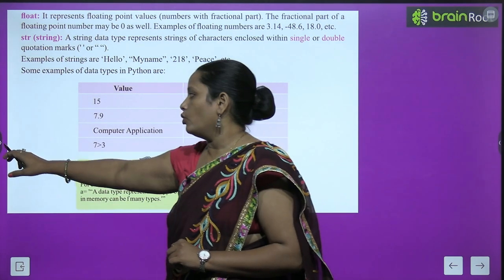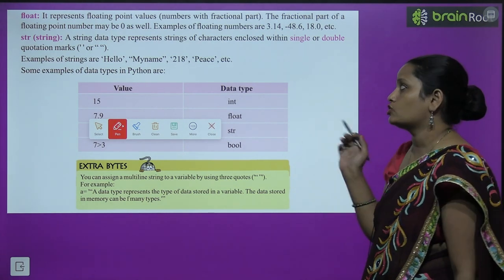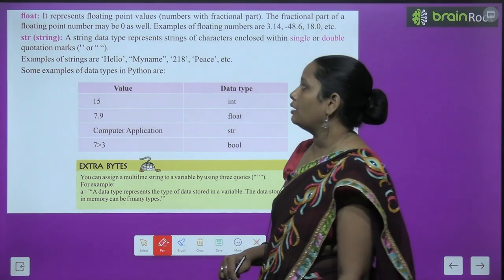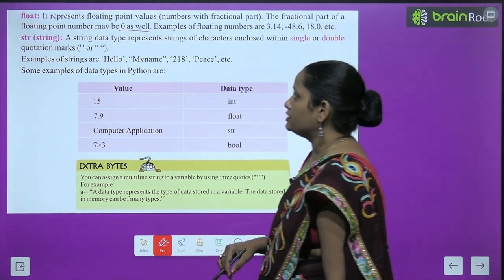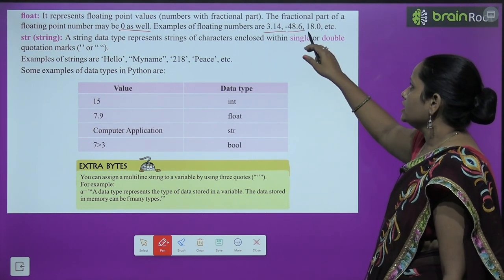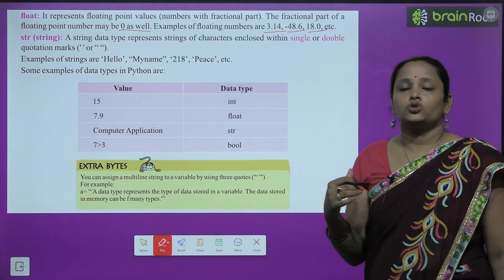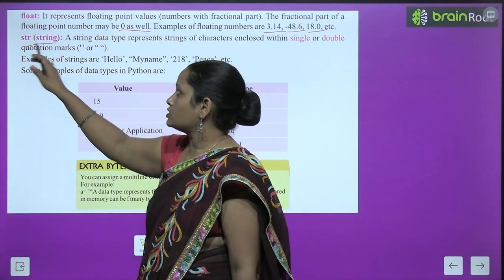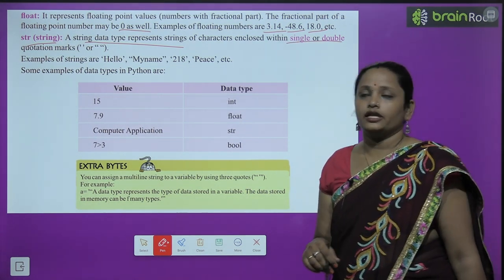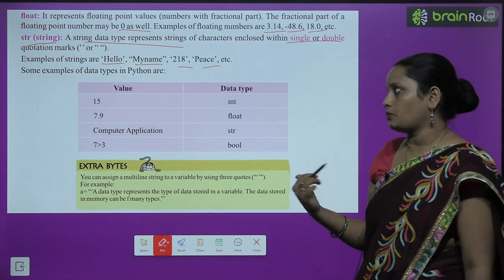Next is float — it represents floating point values, which are numbers that also have a fractional part. The fractional part of a floating point number may be zero as well. Examples of floating point numbers: 3.14, -48.6, 18.0. Then comes string — the string data type represents string characters written inside single or double quotation marks, such as 'hello', 'my name', '218', 'peace', etc.